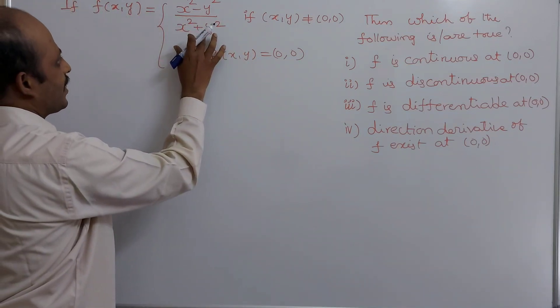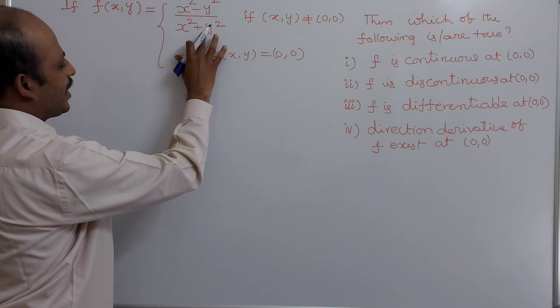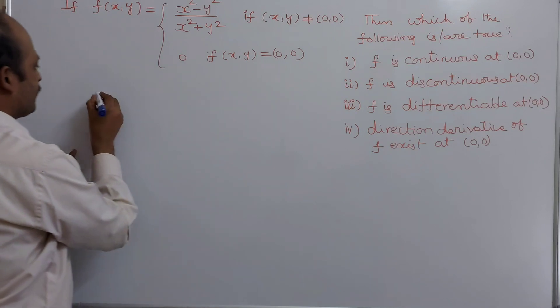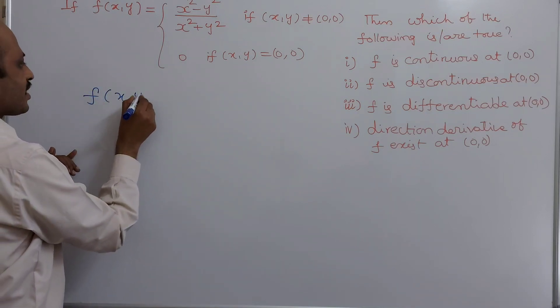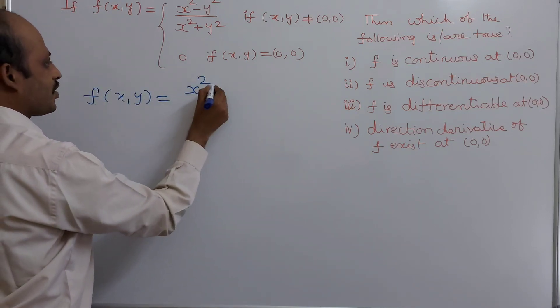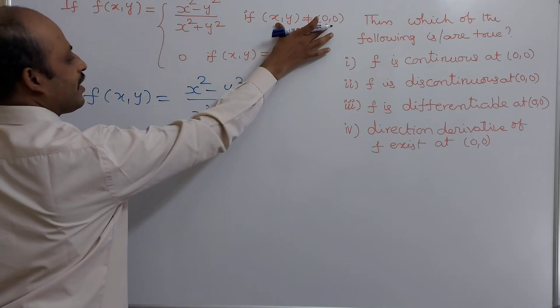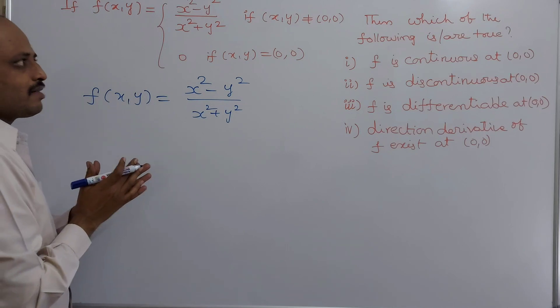Let us see one problem from real analysis. f(x,y) is equals to x square minus y square divided by x square plus y square if (x,y) not equals to (0,0). And 0 if (x,y) is equals to (0,0). This is the function x square minus y square divided by x square plus y square whenever (x,y) not equals to (0,0).